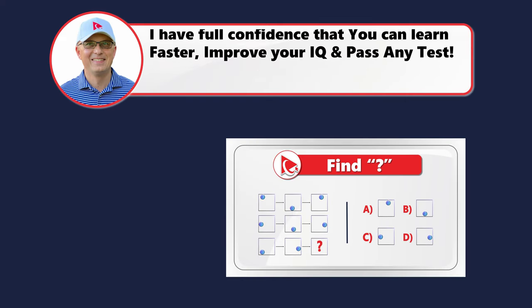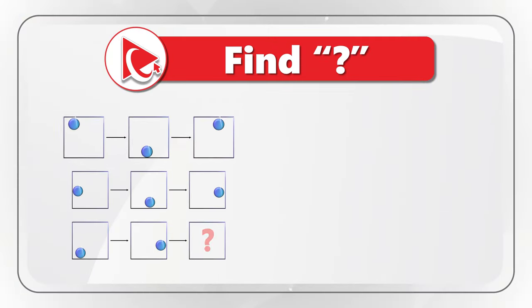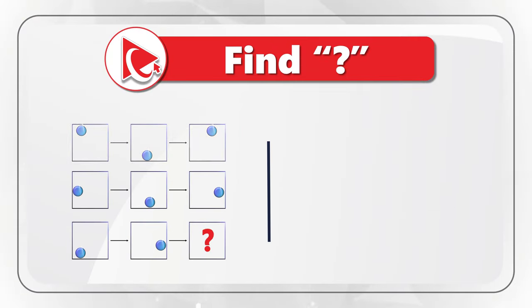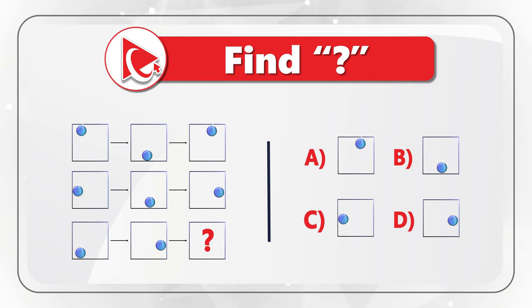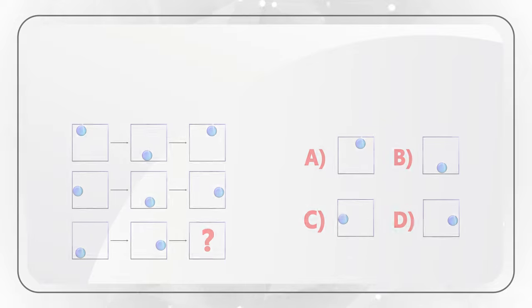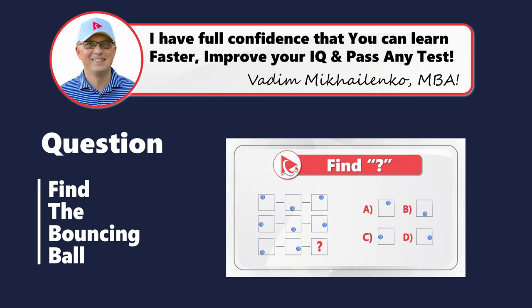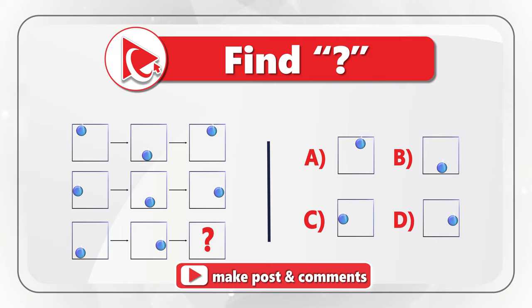I love this question because it really boosts your IQ and improves your intelligence. You are presented with three rows of objects. Each object represents a square with a circle inside. You need to select the missing object out of four possible choices — A, B, C, and D. Take a close look to see if you can come up with the solution. I have full confidence that you've figured it out, so I'm moving forward to share my version of the answer. If you have a better way to solve it, please post in comments.